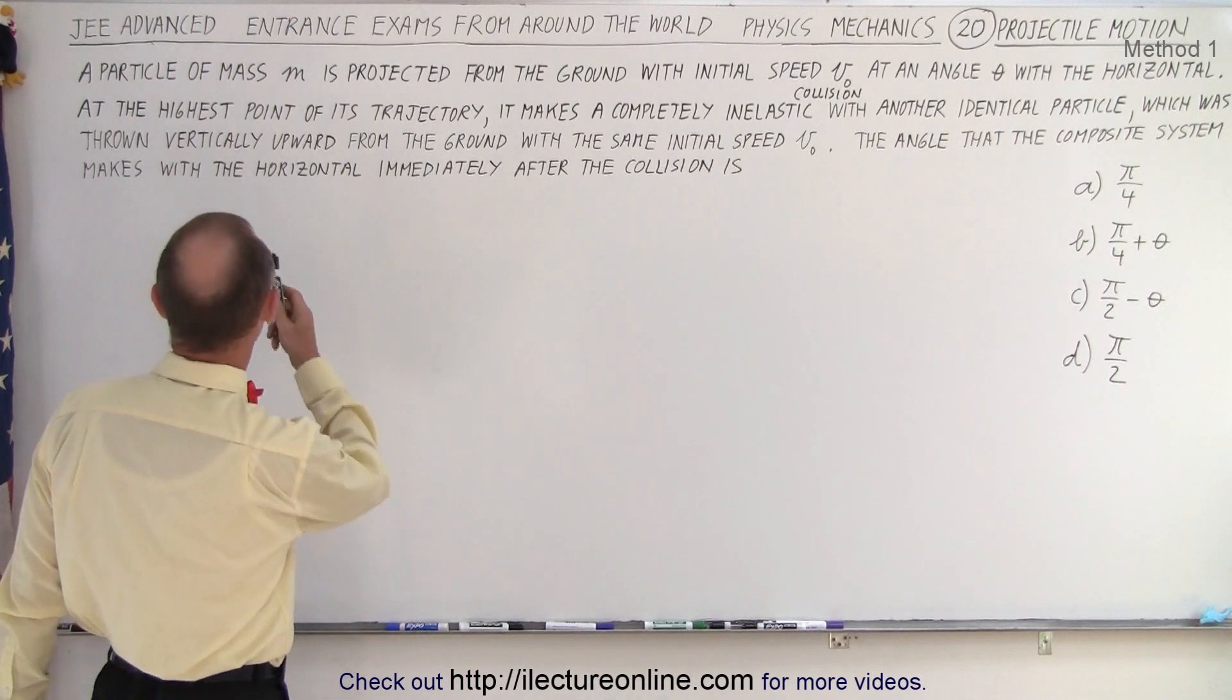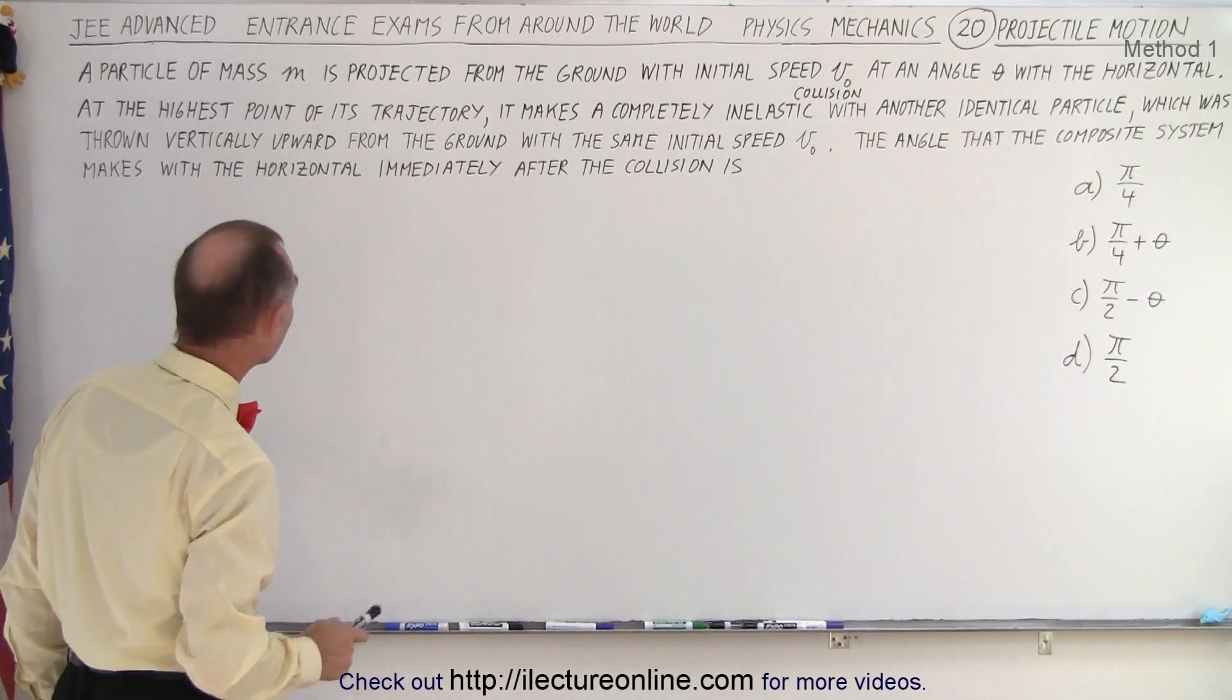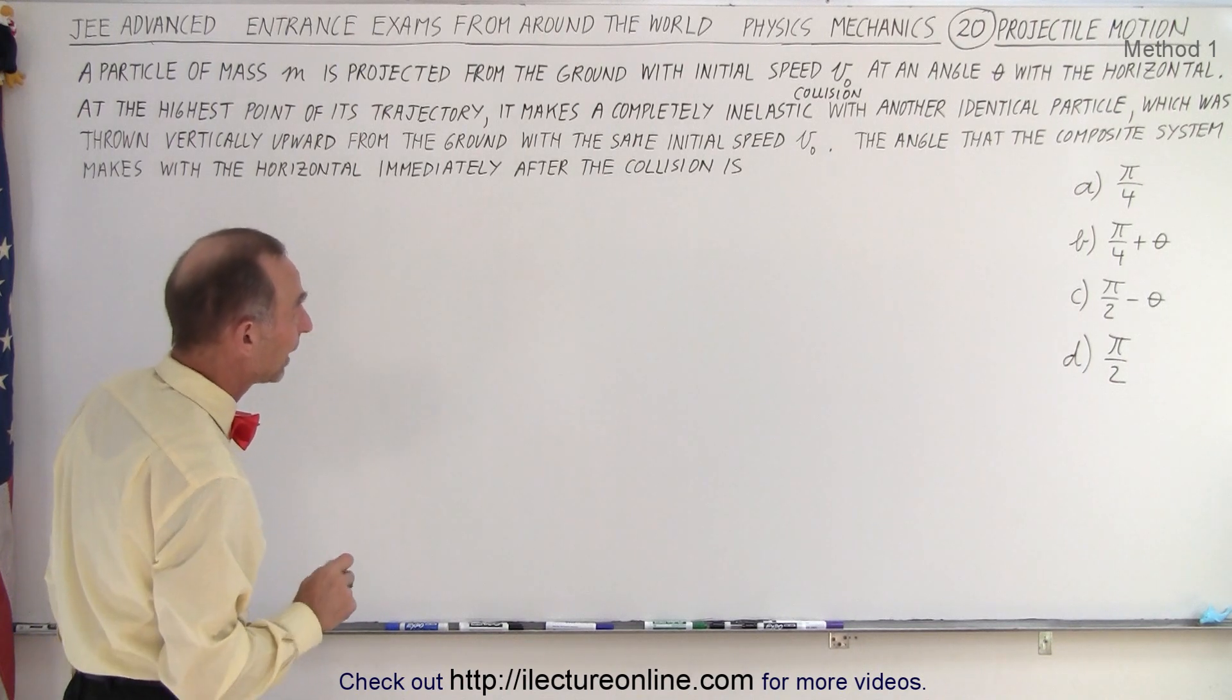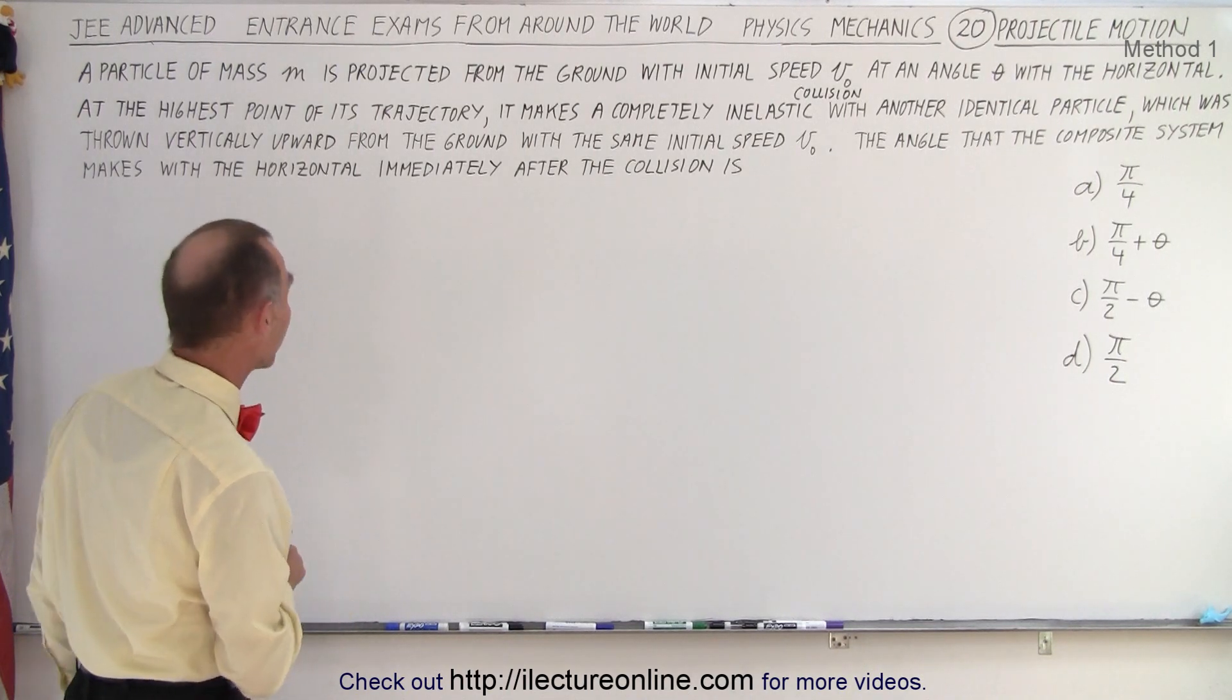So first let's read the problem. It says a particle of mass m is projected from the ground with an initial speed v sub nought at an angle theta with the horizontal.